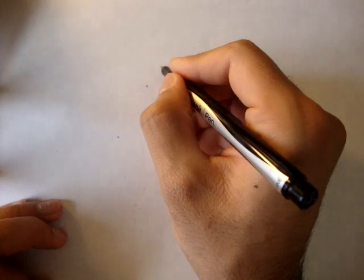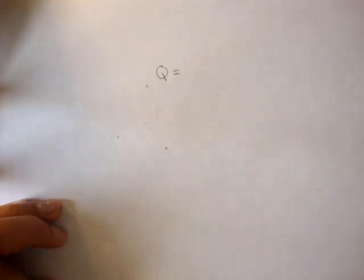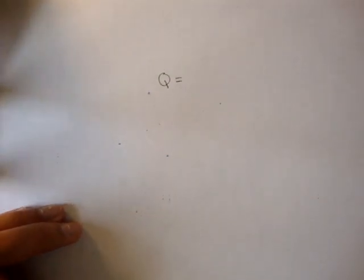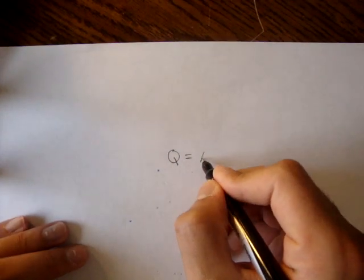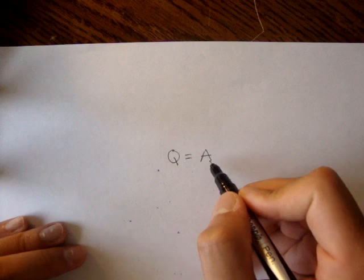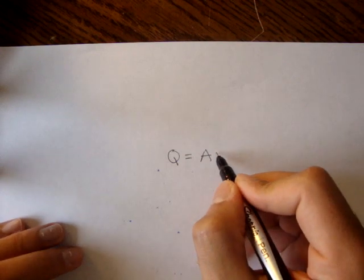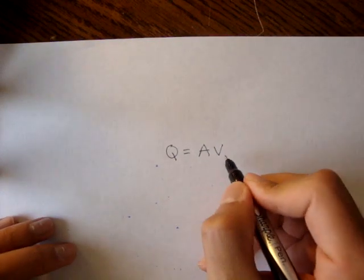And we know that, we know q, or the flow rate, is equal to the area, the cross-sectional area of the tube, times the velocity. In this case we found v2, so we'll use v2 and a2.